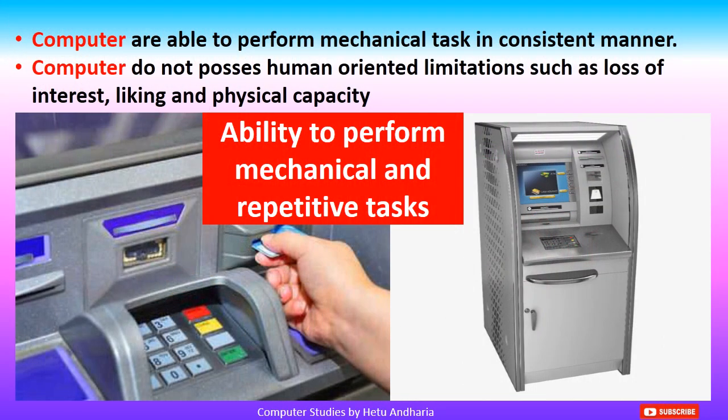The ability to perform mechanical and repetitive tasks is totally opposite to human beings. Computers are able to perform mechanical tasks in a consistent manner. For example, a computer fitted in an ATM center has to work 365 days a year, 24 hours a day, doing the same type of work. But it doesn't get tired. Computers do not possess human-oriented limitations such as loss of interest, likes, or physical capacity. They will go on working consistently without making any mistake.